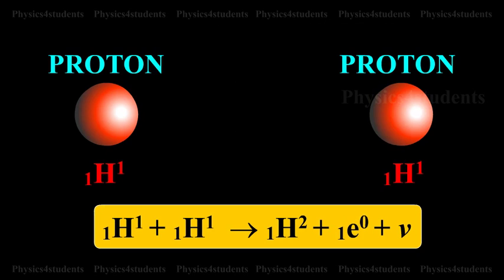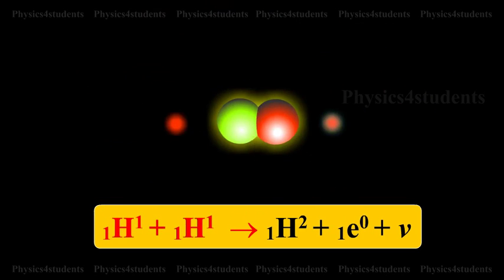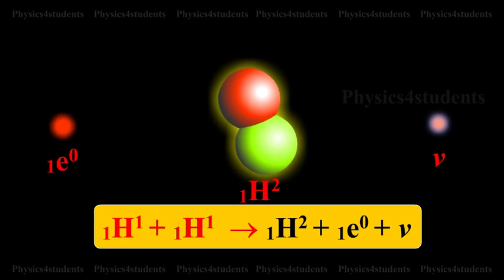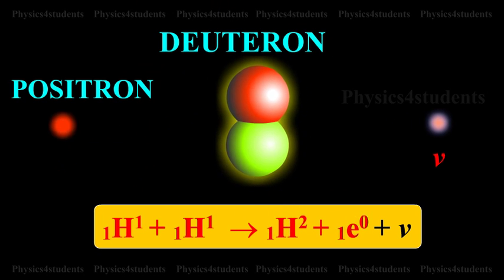Proton-proton cycle: One proton combines with another proton gives deuteron, positron and neutrino.